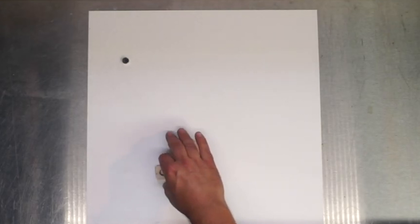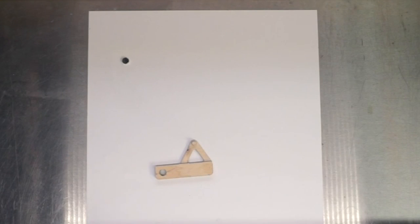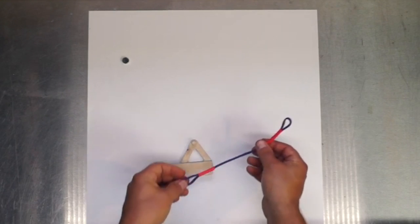The little dot is a rare earth magnet. It sticks very strongly to the metal table under the sheet.